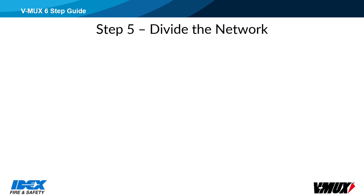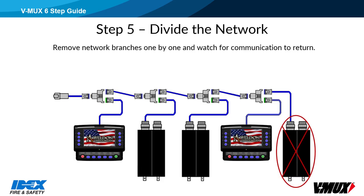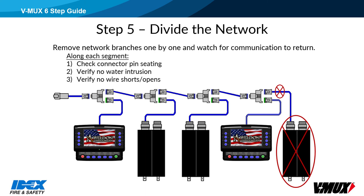Step 5: Divide the network. If communication is lost, divide the network to identify which part is causing the problem. If you remove a branch of the network and communication returns to the rest of the nodes, then you know the problem lies with that branch and you can troubleshoot accordingly. Common communication problems are water intrusion in the Y-splitters, shorted or open communication wires, and pins not properly locked into connector housings. It would be unusual to find backwards wiring on trucks that are complete — this is an issue that would be found and fixed at the factory. Check ground wires to all nodes — a node with a bad or missing ground can appear to be operating correctly but can cause inconsistent communication throughout the network.